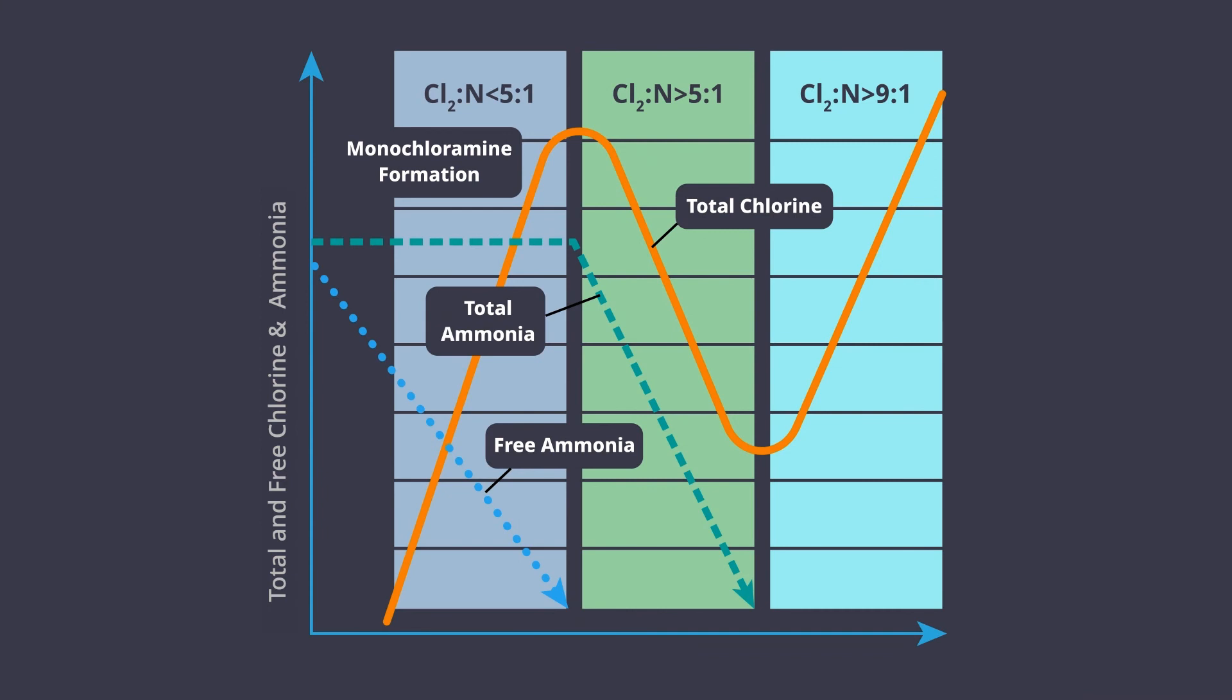How do you know where your utility's water lies on this chart? Some simple measurements can tell you. For instance, in Zone 1, you'll see total chlorine, total ammonia, monochloramine, and free ammonia. To distinguish Zone 1 from Zone 2, it is necessary to measure total chlorine and free ammonia at a minimum.